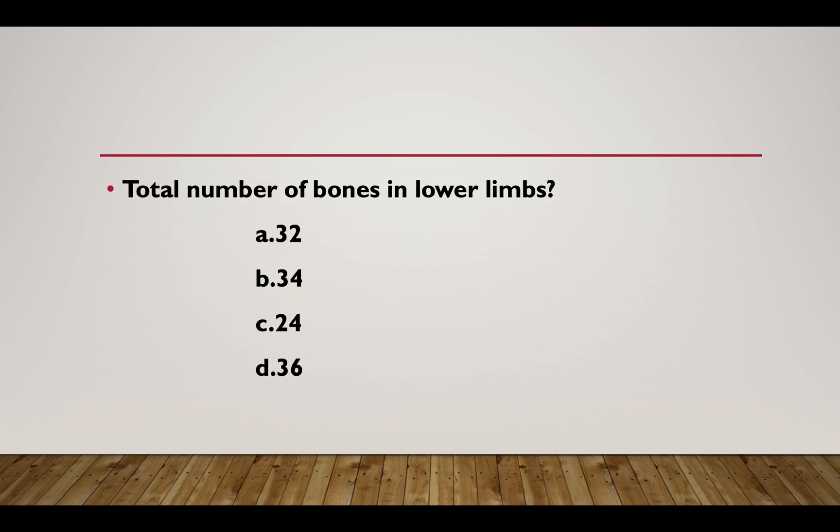Total number of bones in the lower limbs: Option A: 32. Option B: 34. Option C: 24. Option D: 36. Answer: Option A — 32.